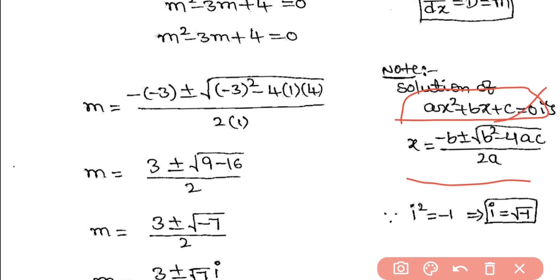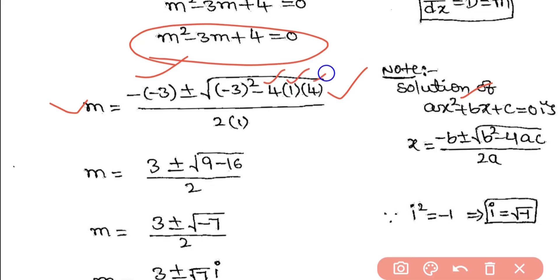Here, in terms of m: m = (-(-3) ± √((-3)² - 4ac))/(2a). So m = (3 ± √(9 - 4×1×4))/(2×1), which gives m = (3 ± √(9 - 16))/2.